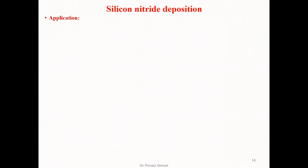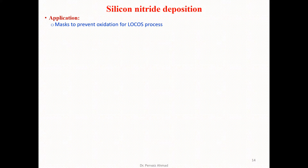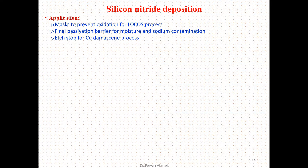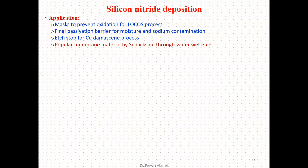The applications of silicon nitride include its use as a mask to prevent oxidation for the LOCOS process, as a final passivation barrier against moisture and sodium contamination, as an etch stop for the copper damascene process, and as a membrane material via silicon backside through-wafer wet etch.